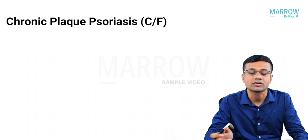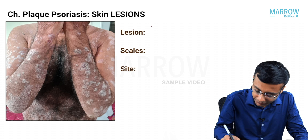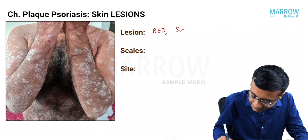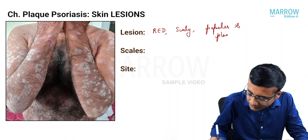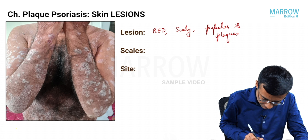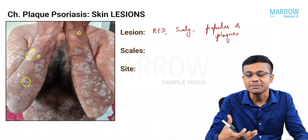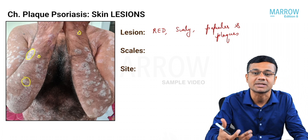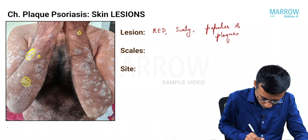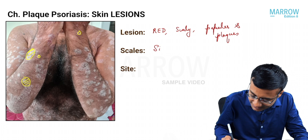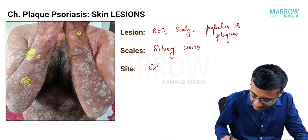Now, the clinical features of chronic plaque psoriasis. The patient presents with red, scaly papules and plaques — smaller lesions are called papules and bigger lesions are called plaques. The scales are called silvery white scales and are very important for psoriasis. The distribution is predominantly over the extensor aspect of the body — the elbows, knees, and scalp.